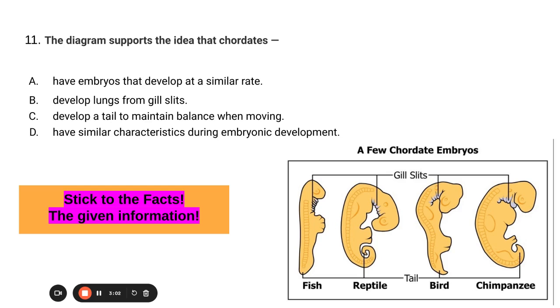The diagram supports the idea that chordates develop lungs from gill slits. We see gill slits, but do we see what happens to them later? No, because we're sticking to the facts.